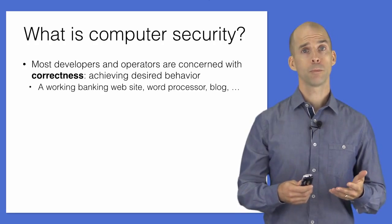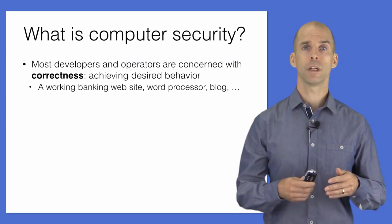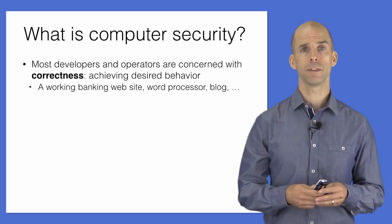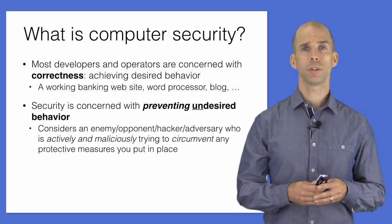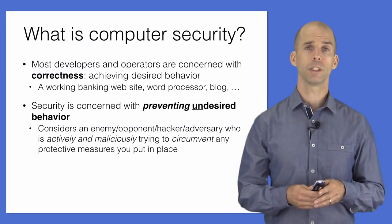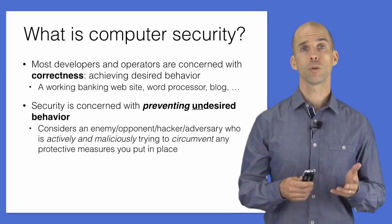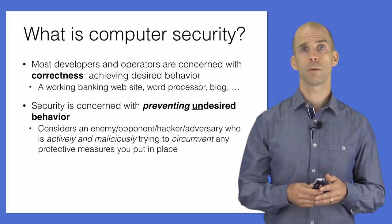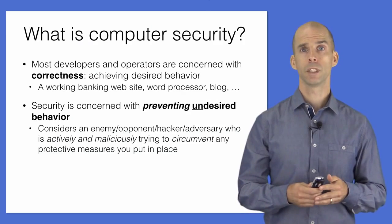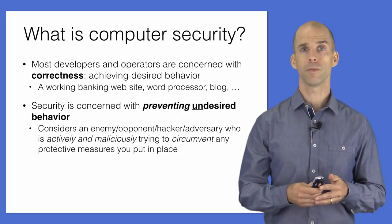If developing a word processor, the concern is that when a file is saved and reloaded, you get back your data from where you left off. A secure computer system is one that prevents specific undesirable behaviors under wide-ranging circumstances. Where correctness is largely about what a system should do, security is about what it should not do, even when there is an adversary actively and maliciously trying to circumvent any protective measures you might put in place.